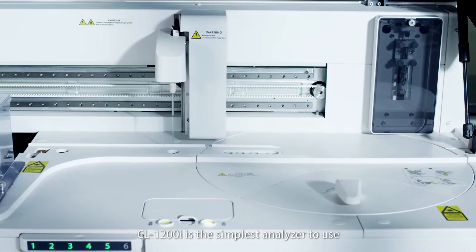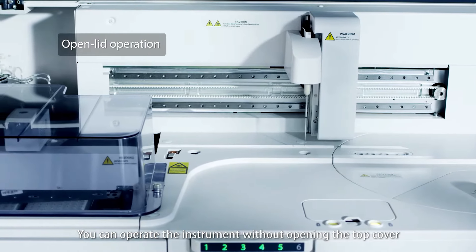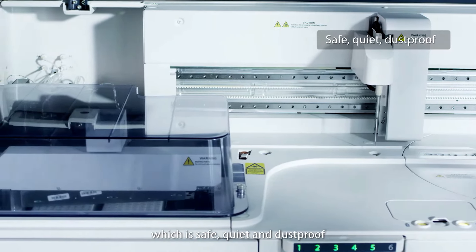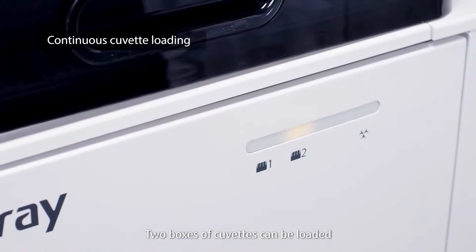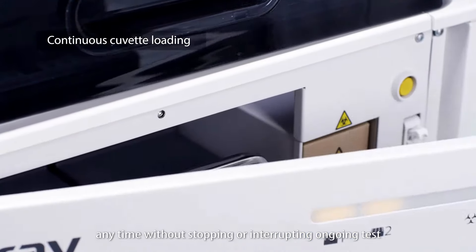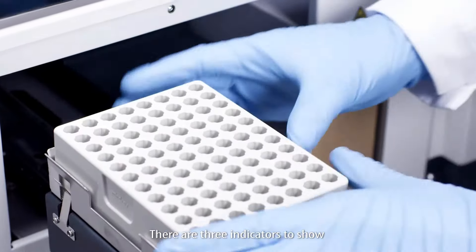CL-1200i is the simplest analyzer to use. You can operate the instrument without opening the top cover, which is safe, quiet, and dustproof. Two boxes of cuvettes can be loaded anytime without stopping or interrupting ongoing tests. There are three indicators to show the real-time status of the cuvettes and waste bag.